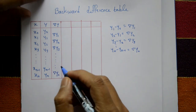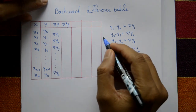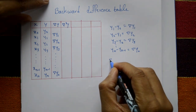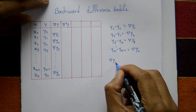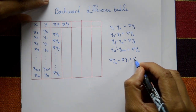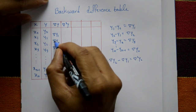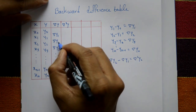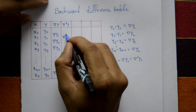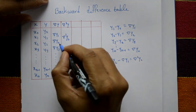Next is the second backward difference. The second backward difference is the first backward difference y2 minus the first backward difference y1, which is equal to the second backward difference y2.